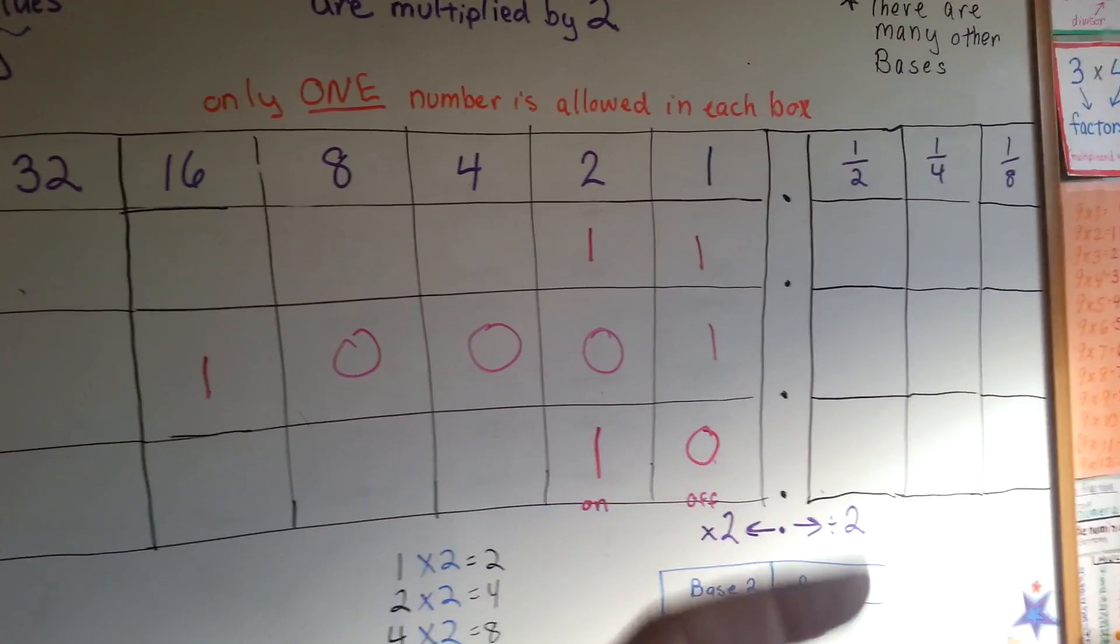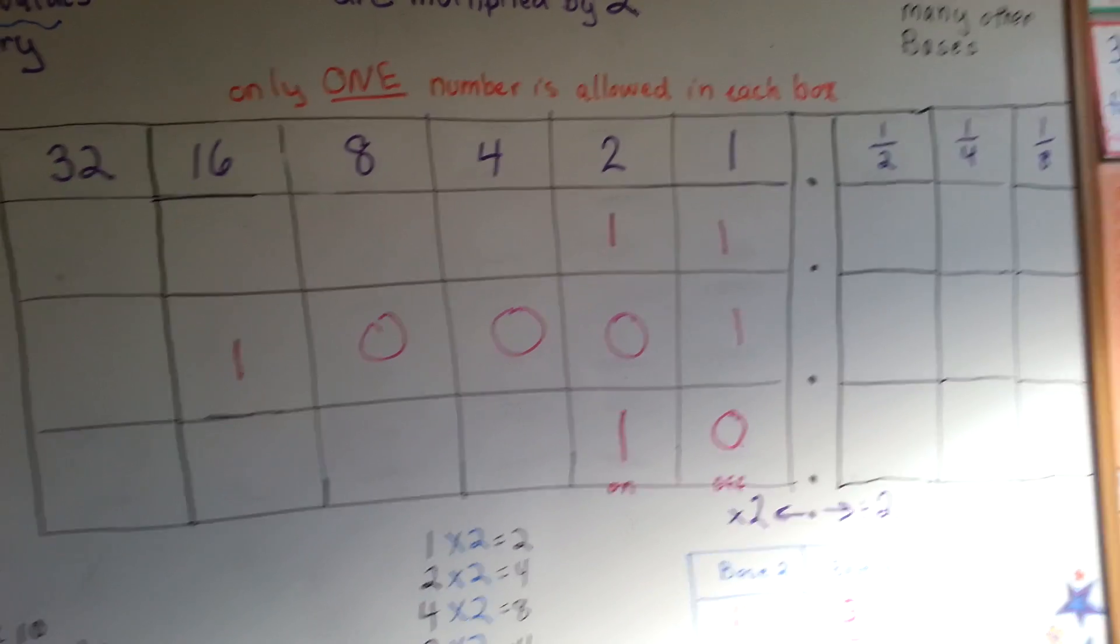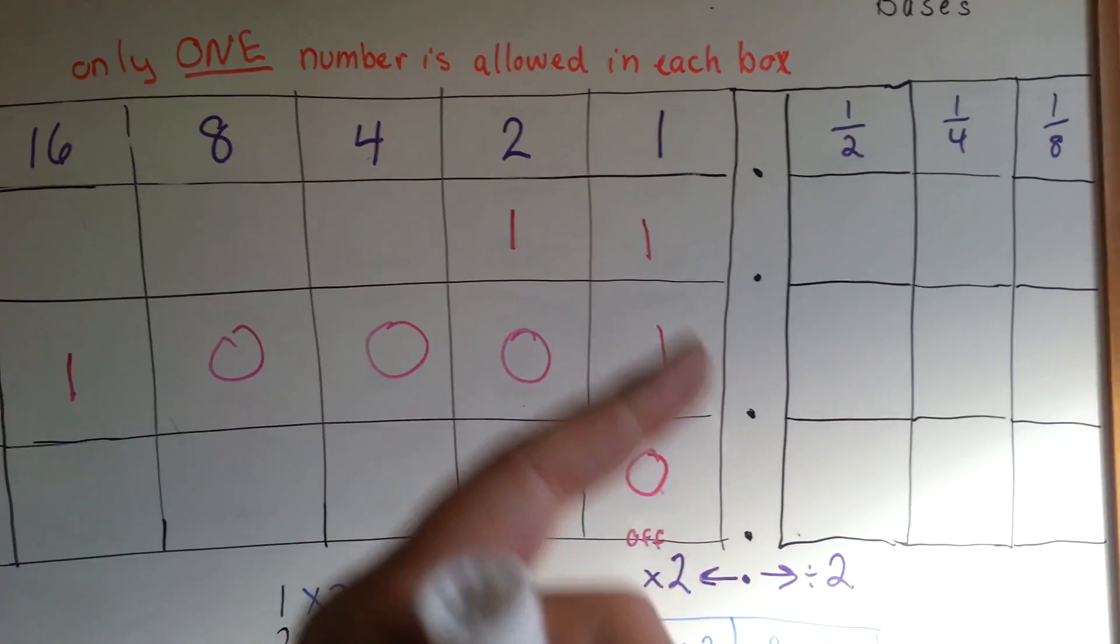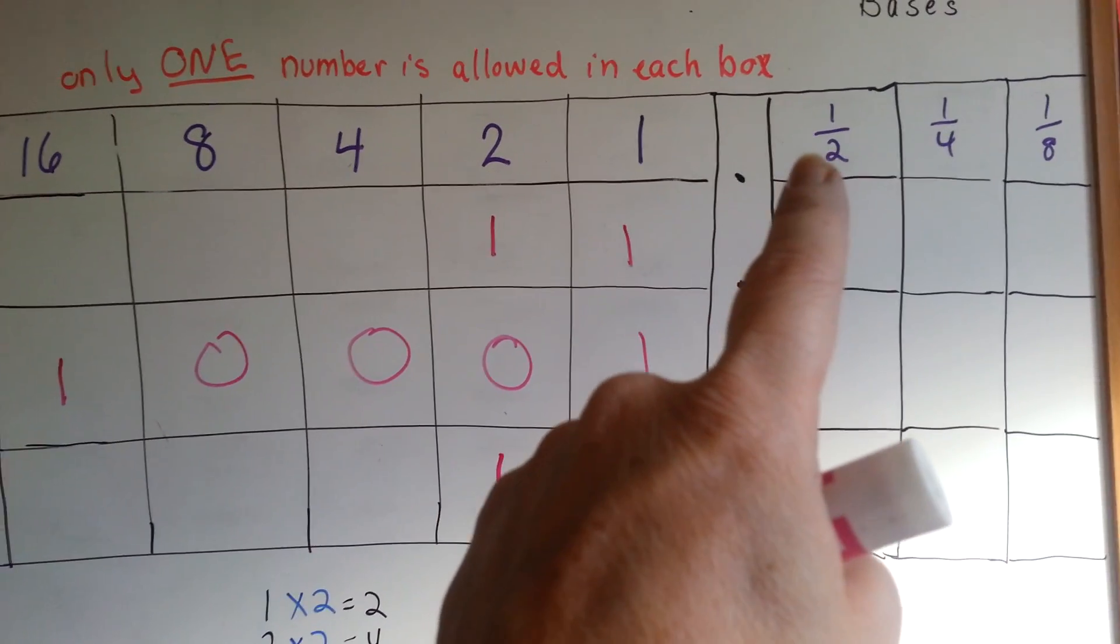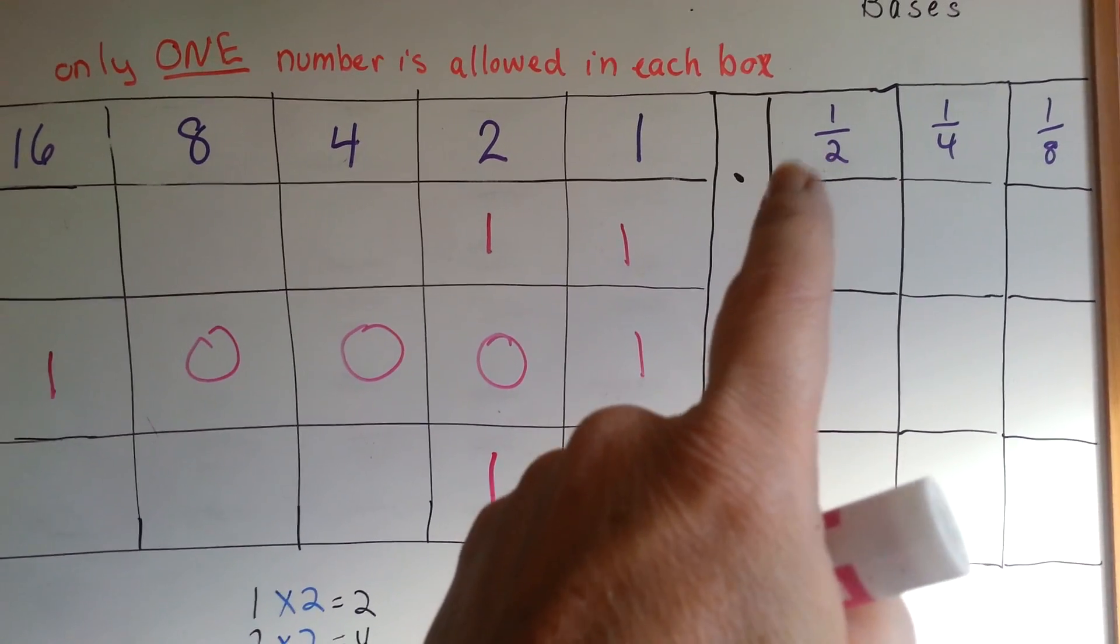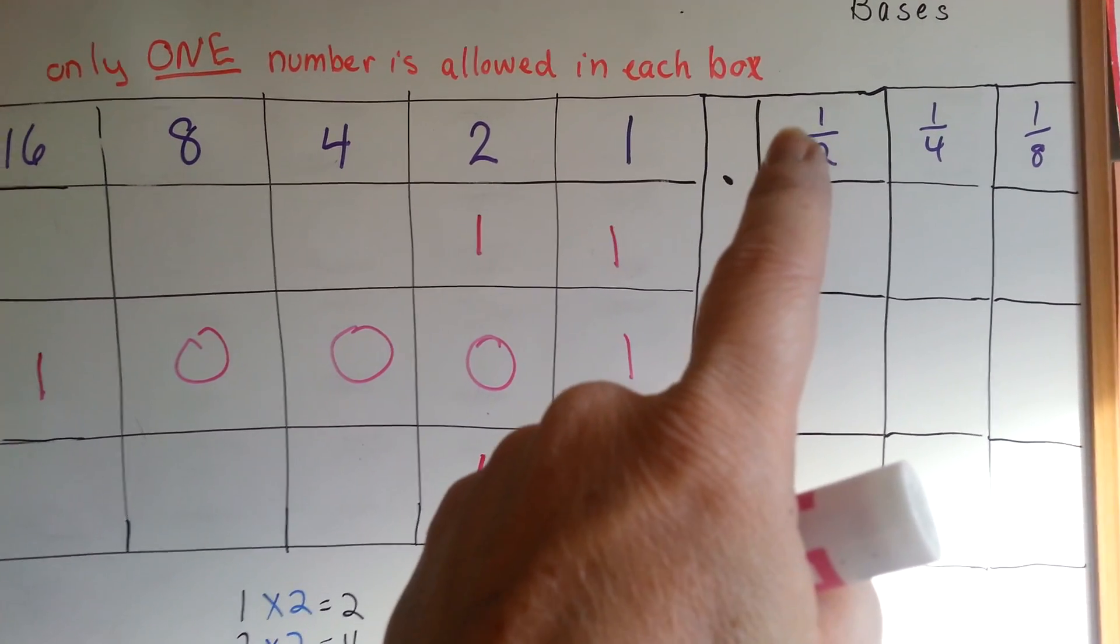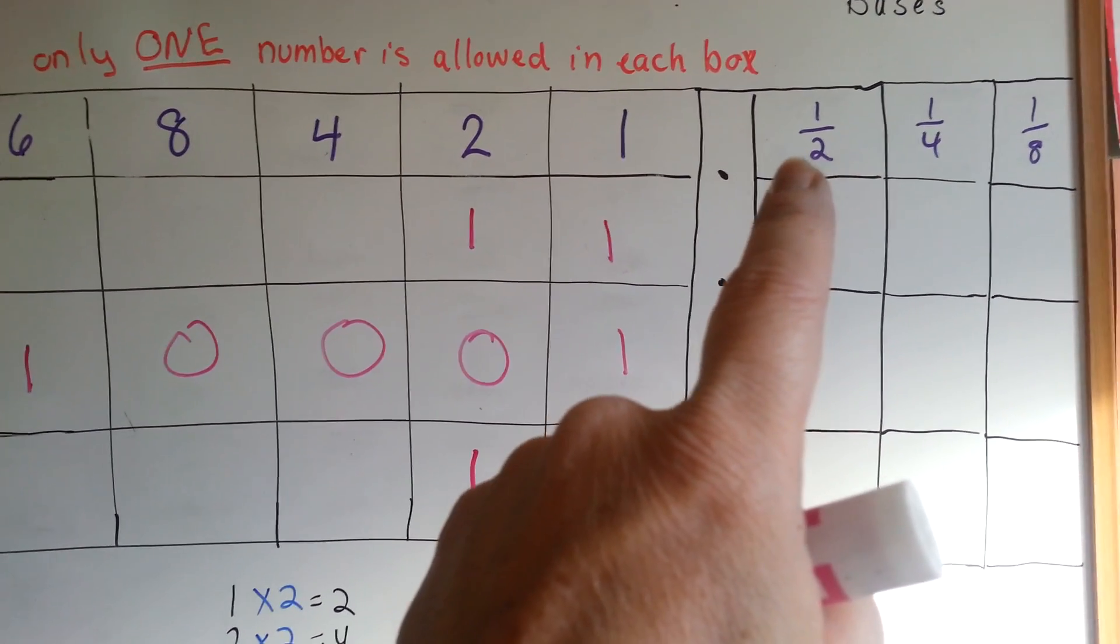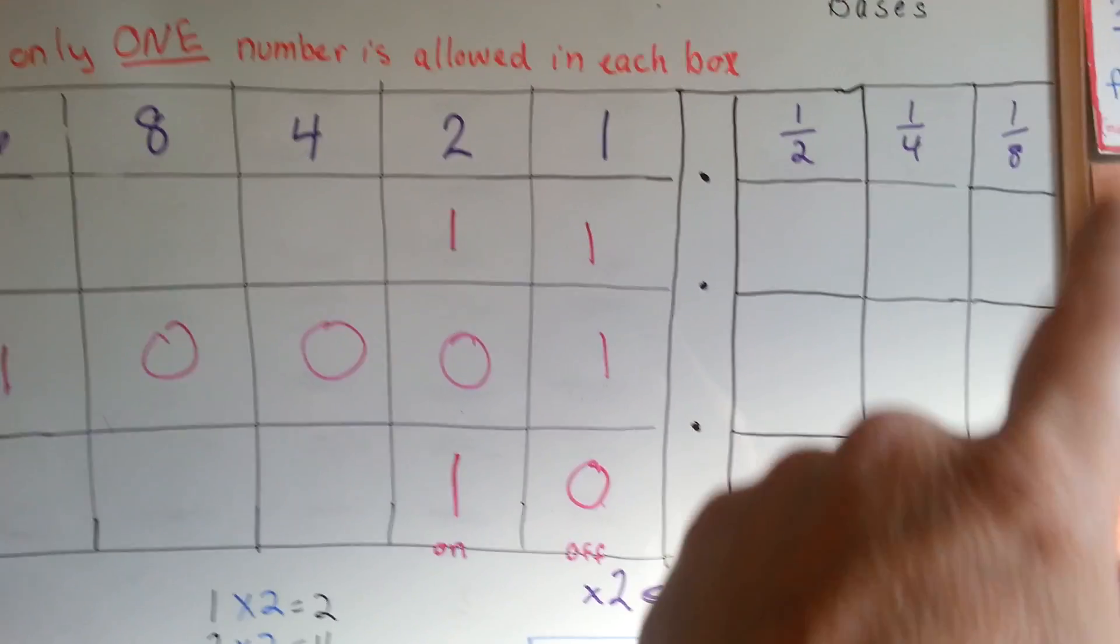When we go to the right of the decimal place, in binary code, in base 2, we divide everything by 2. So, instead of the tenths place, which would be in base 10, we have a half. A half divided by 2 would be a fourth. A fourth divided by 2 is an eighth.